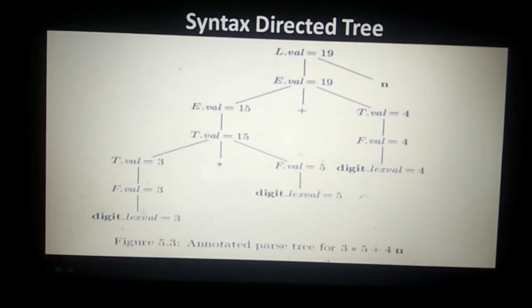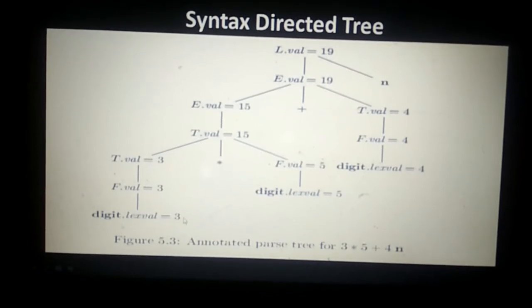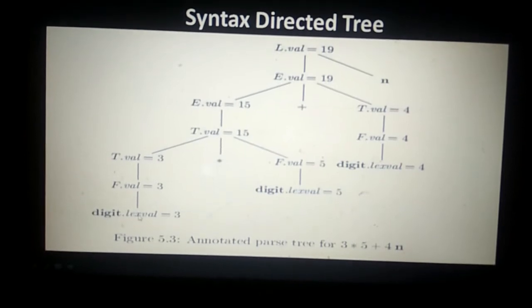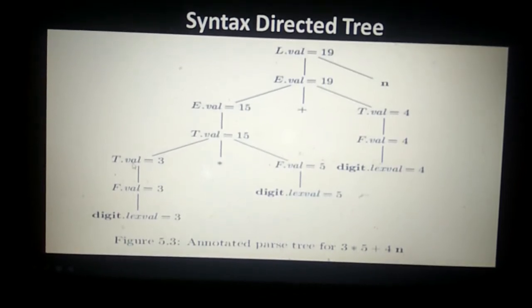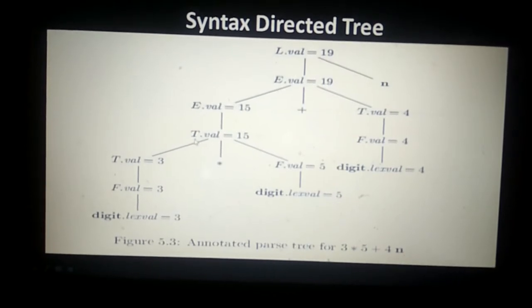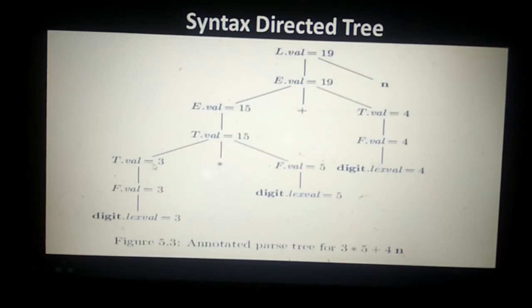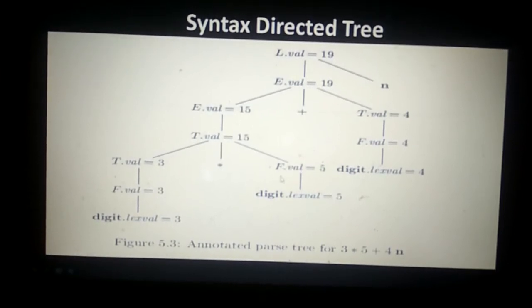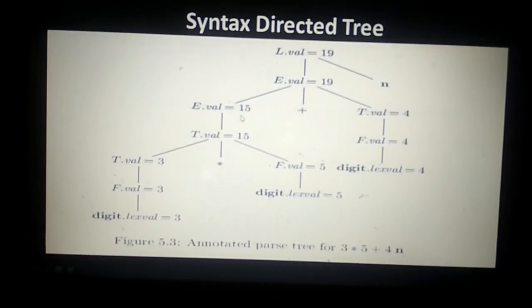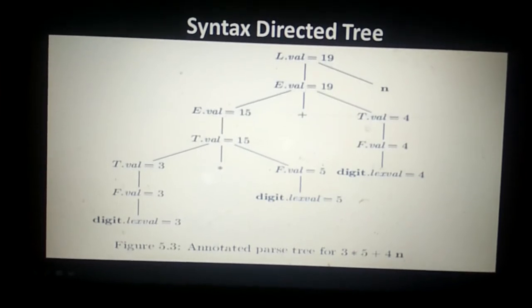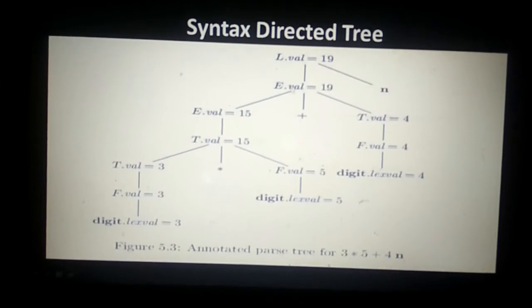Now we convert the parse tree into an annotated parse tree for 3 * 5 + 4 n in bottom-up order. The lexical value is supplied directly by the lexical analyzer. digit.lexval = 3 is passed up to give F.val = 3, and T.val = 3. Similarly, digit.lexval = 5 gives F.val = 5. Then T.val is computed as T.val * F.val = 3 * 5 = 15, which is passed to E.val. Continuing to the right, with E.val = 15 and T.val = 4, applying the plus operator gives the final value of 19.